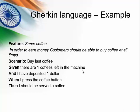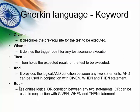The first keyword is 'Given' — the prerequisite is that at least one coffee should be in the machine. We add the 'And' keyword with one more condition: we have to deposit one dollar. Once the dollar is deposited, we press the coffee button — using 'When.' Then the coffee will be served — using 'Then.' These are all the keywords used in Gherkin language: Given, When, Then, And, and also 'But,' which is similar to a condition and can be used anywhere. This is about the Gherkin language.